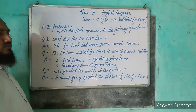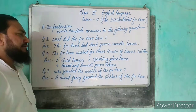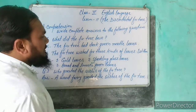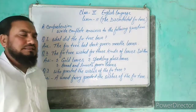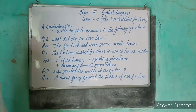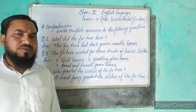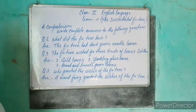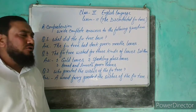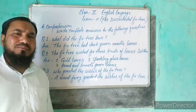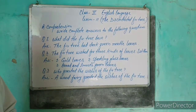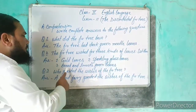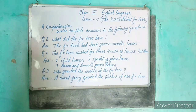उसके बाद second time, जब robber उसकी पत्ती तोड़कर ले गया, तो उसने दुबारा wish किया: Sparkling glass leaves — मतलब चमकते हुए शीशे जैसी पत्ती। वो तूफान में एक-दूसरे से टकराकर चूर-चूर हो गई, टूट गई। तो फिर उसने wish किया: Broad and smooth green leaves — बड़ी और मुलायम हरी पत्ती। तो उसका तीन wishes था: Gold leaves, sparkling glass leaves, broad and smooth green leaves। ये तीन wishes fir tree ने की थी।